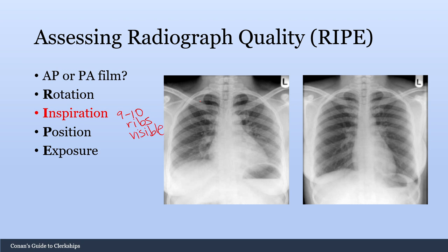To count the ribs, first find the first rib, which curves back around and loops at the top. Then count down: 1, 2, 3, 4, 5, 6, 7, 8. For the patient with a better inspiration, you can count all the way to 9 and 10, confirming this is a good quality radiograph.